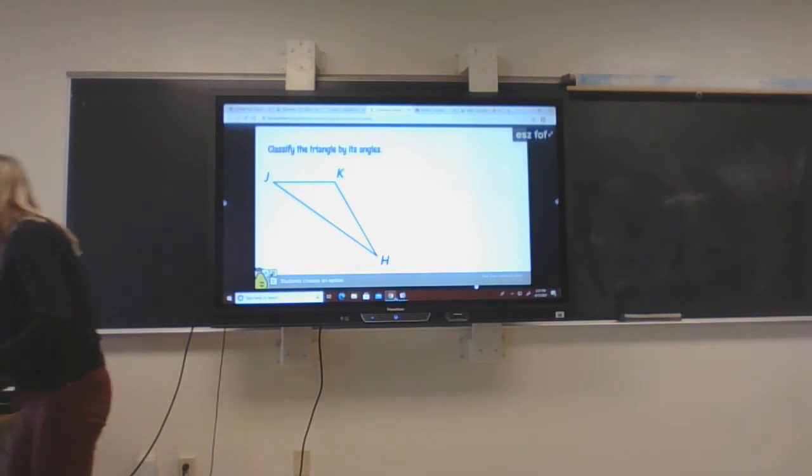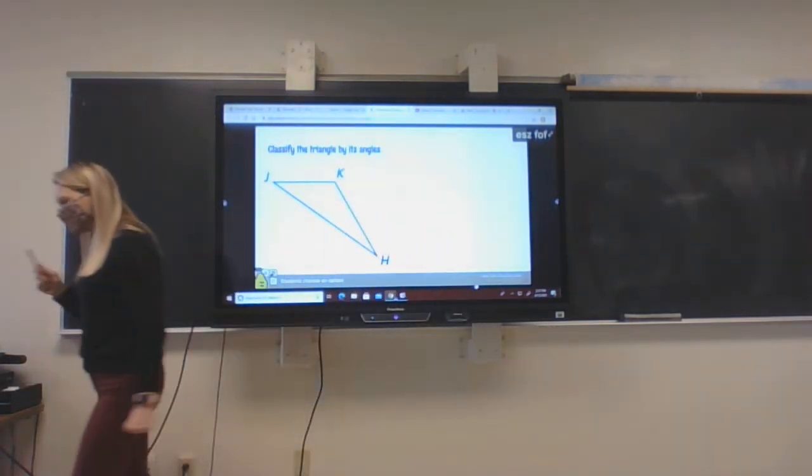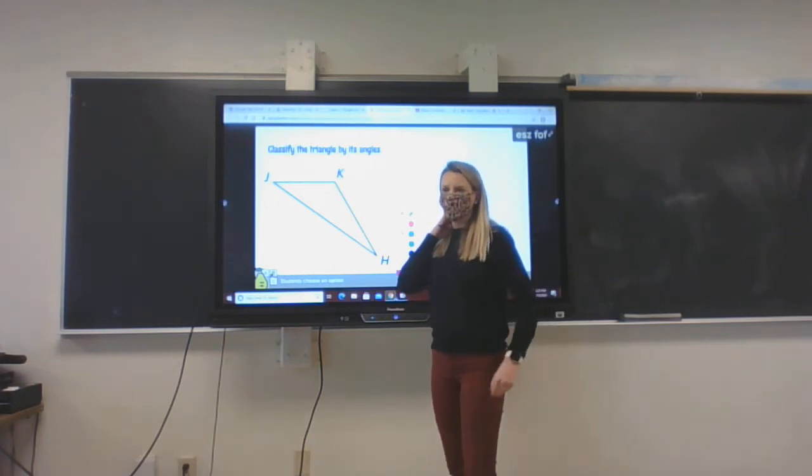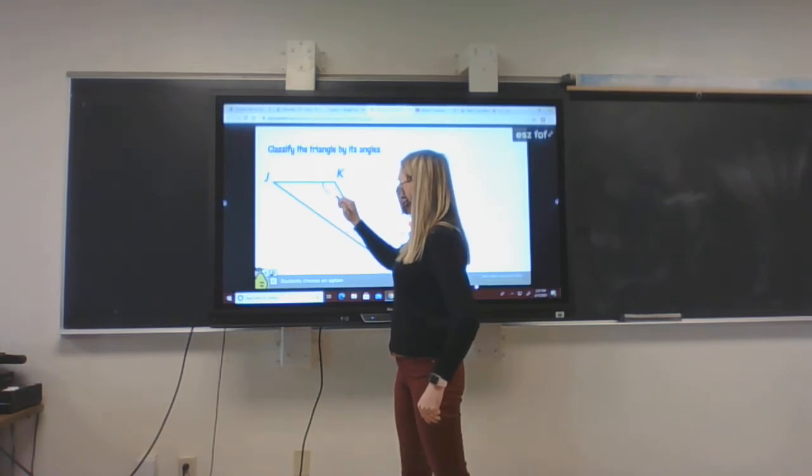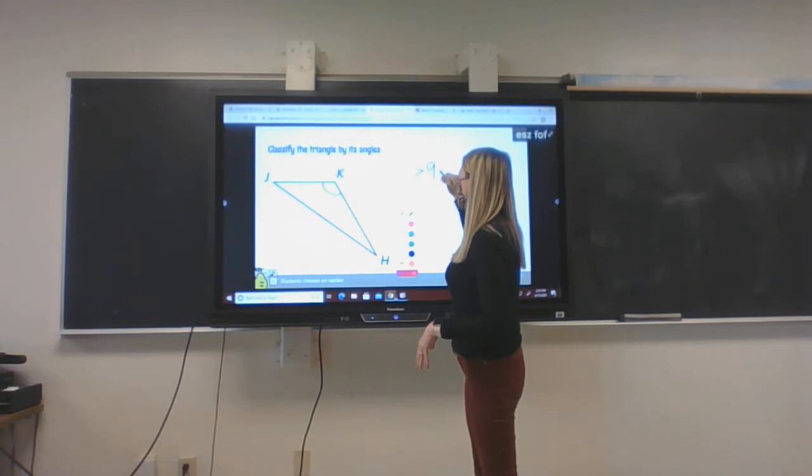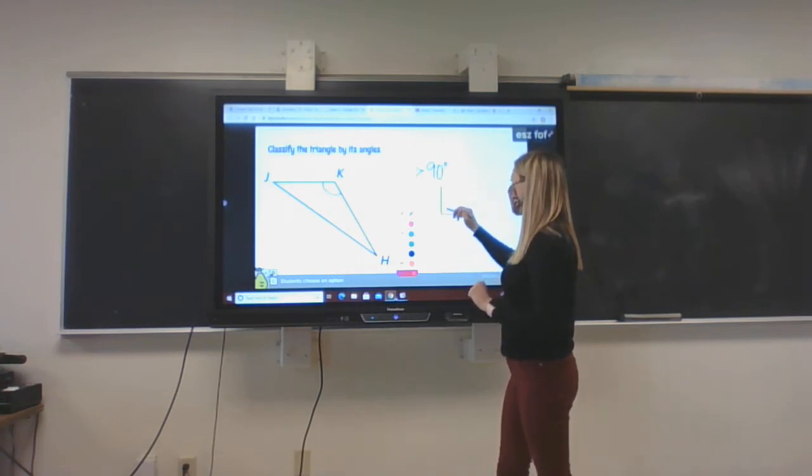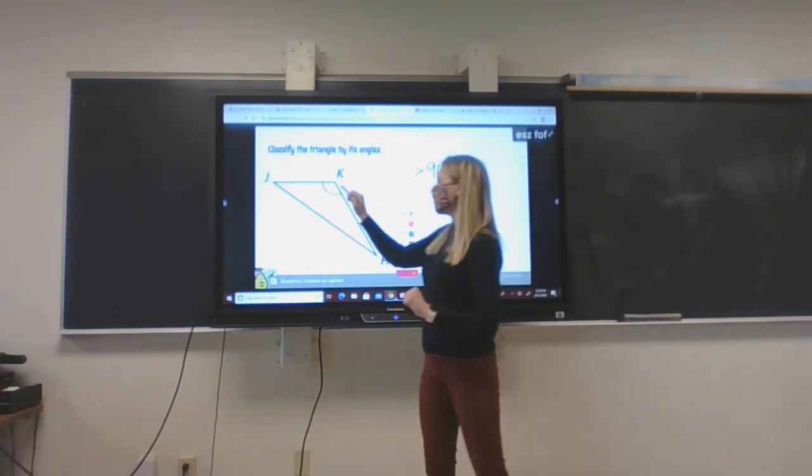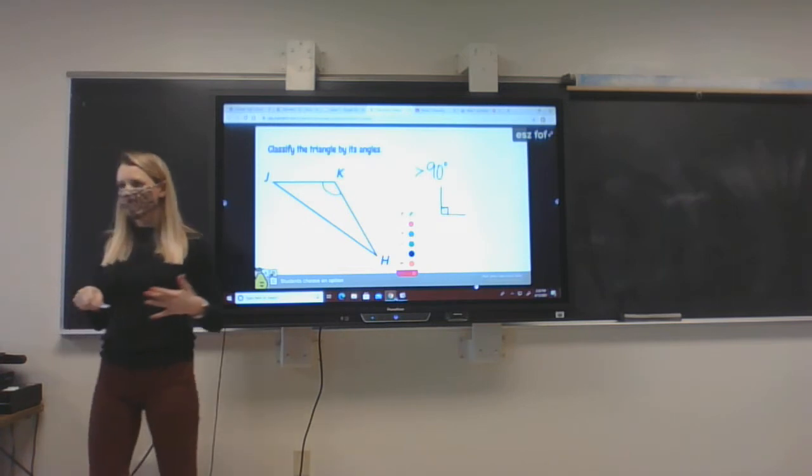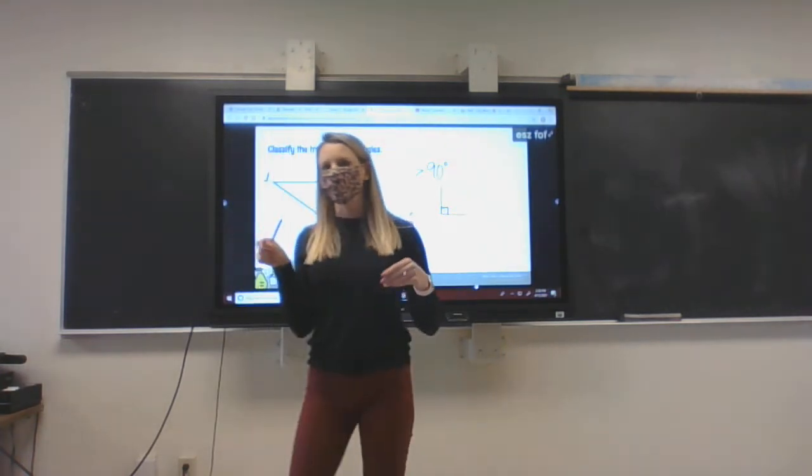Now, I'm going to tell you that I agree with Alex H. Alex H said that it is an obtuse triangle. Now, Alex, which angle did you think was an obtuse angle? Alex says that angle K is the obtuse angle. If I look at that, remember, obtuse angles are greater than 90 degrees. Right angles are always going to give us that box in the corner. That's our symbol that we use. Now, this one, this is larger than a right angle. Therefore, angle K has to be an obtuse angle.